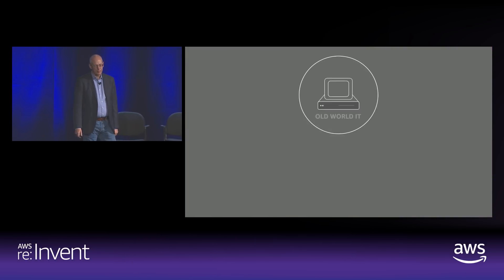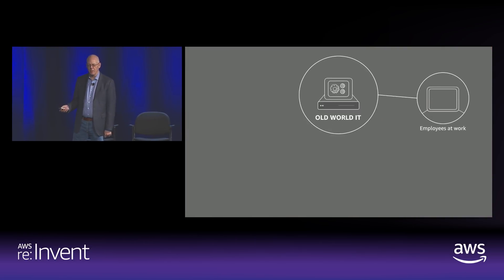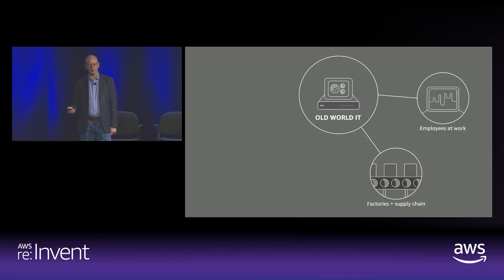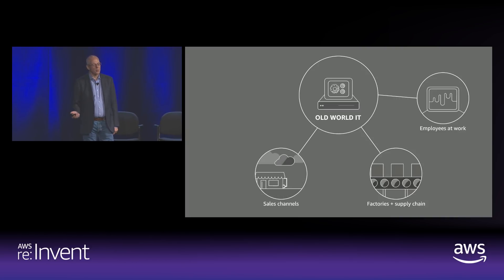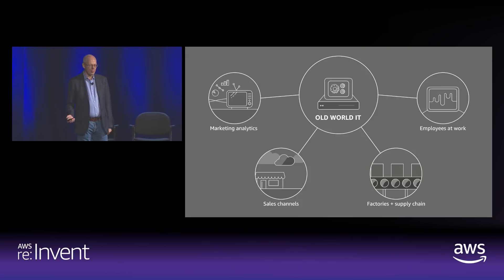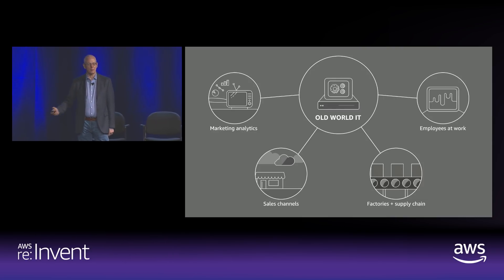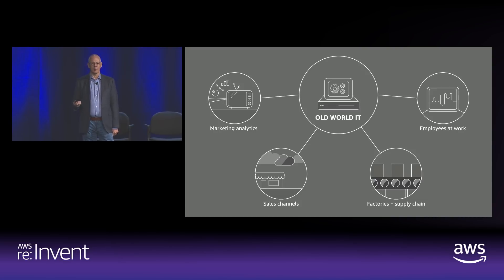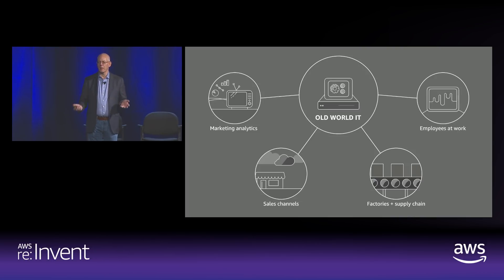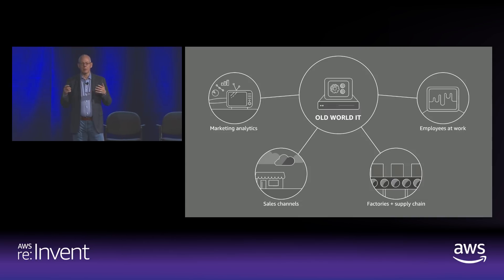In old world IT, before digital transformation, you managed employees at work while they were at work. You had factories and supply chain. Your sales channels involved shipping stuff — you put it in a box and sent it to a shop. Marketing meant putting something on TV or a print ad and finding out indirectly if anyone saw it. The thing that's missing here is the end customer. Everything is indirect. The real difference in the new world is that we transcend these indirect stages and go directly to the customer.